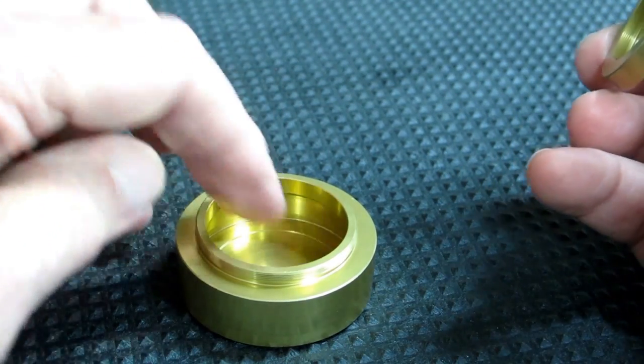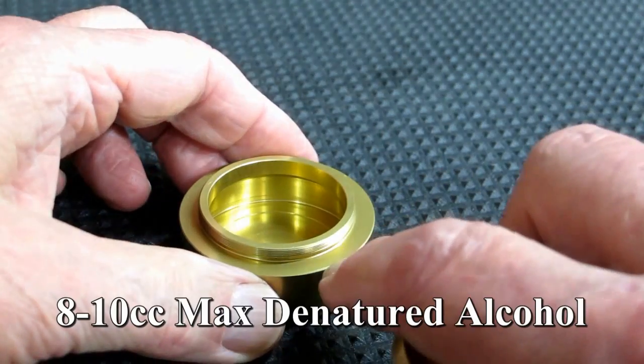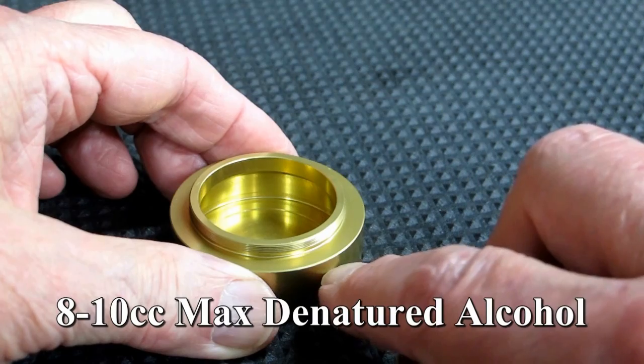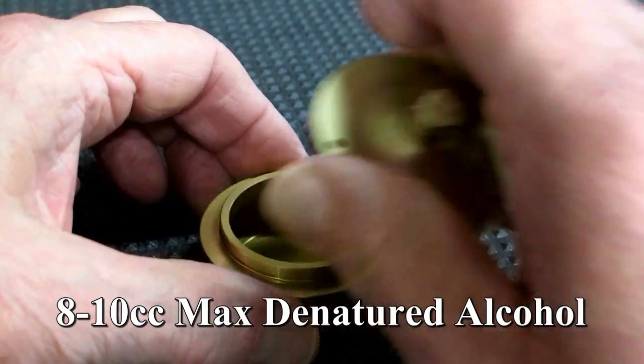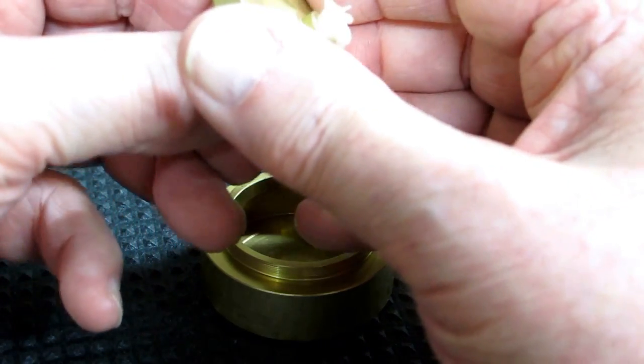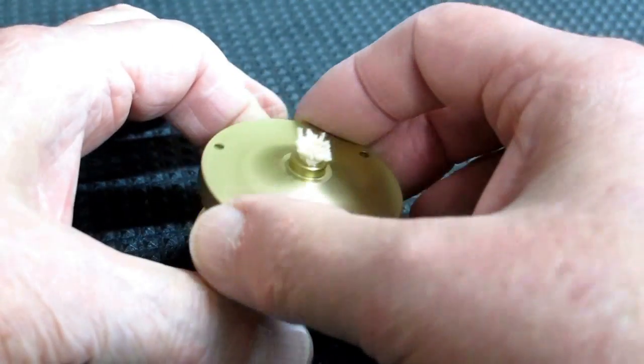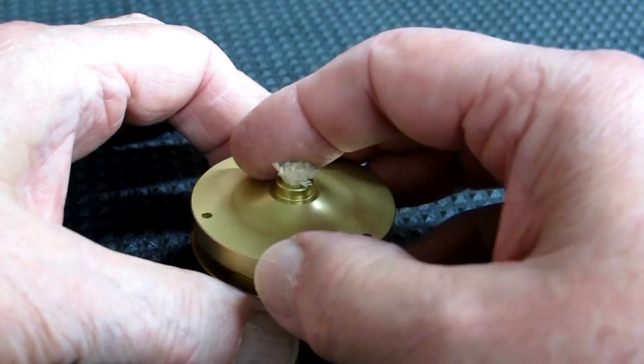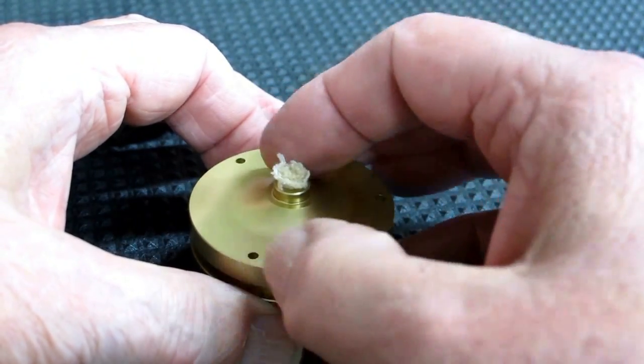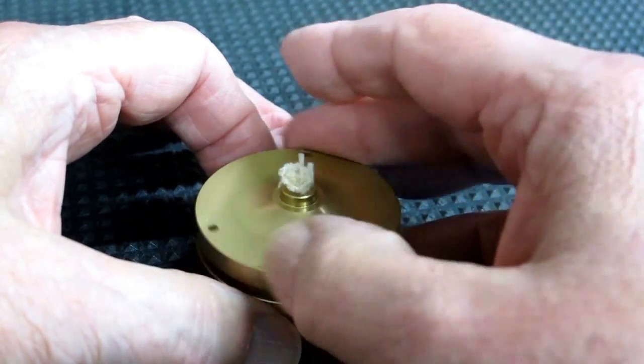You would fill this, I would fill it about that full with alcohol. I wouldn't overfill it. And adjust this wick to where it doesn't stick out too far. And put that down in there. Very carefully screw this on so as not to cross the threads.